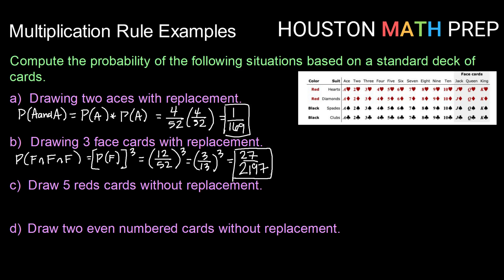In the third question: what is the probability of drawing 5 red cards without replacement? Without replacement — if we're not putting the card back — that makes each draw dependent on the previous draw. For the first draw, there are 26 red cards out of a possible 52 total cards. Once we've drawn that first red card, our next draw is dependent on that, so there are 25 red cards out of 51.